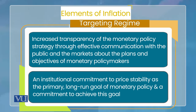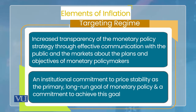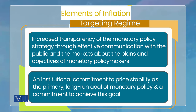پانچواں element: accountability — اگر central bank وہ numerical target جو اسے assign کیا گیا تھا، وہ achieve نہ کر سکے، تو central bank accountable ہوگا۔ تو یہ پانچ elements جس inflation targeting strategy کے اندر ہوں گے، ہم اسے inflation targeting regime کہیں گے۔